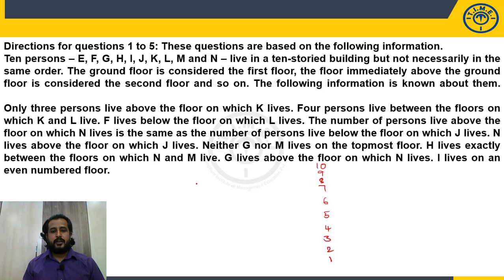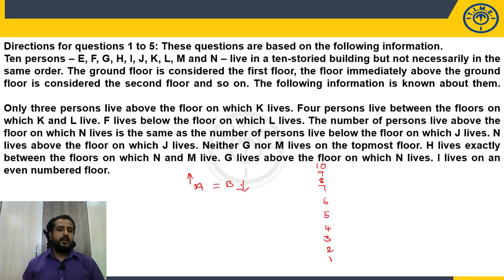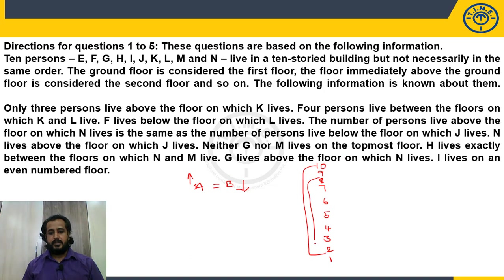Another technical clue is: 'the number of floors above the floor on which A lives is the same as the number of floors below the floor on which B lives.' This means A and B are at corresponding positions from each end — pairs like 10 and 1, 9 and 2, 8 and 3, 7 and 4, 6 and 5. Whenever this kind of information is given, you need to identify these corresponding floor pairs.